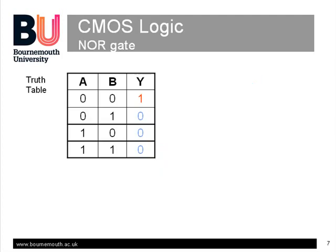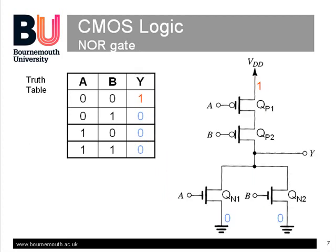To make a two-input NOR gate we have to implement this truth table. Here is the circuit. Let's first see how it handles the zeros in the table with the pull-down network. QN1 and QN2 are NMOS pull-down transistors. If A is 1 it will turn on QN1 and connect the output to 0, and if B is 1 it will turn on QN2 and again connect the output to 0. So the output is 0 if either A or B is 1, which is our required function.